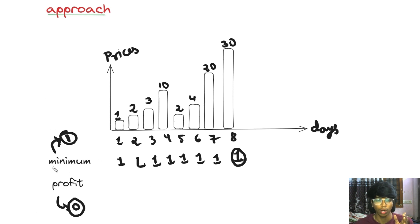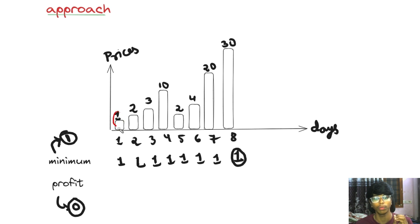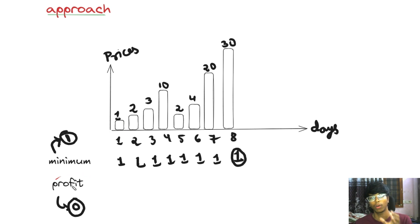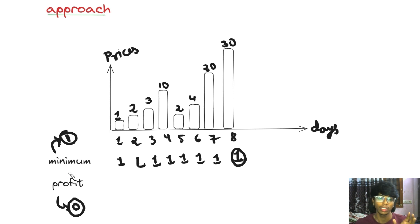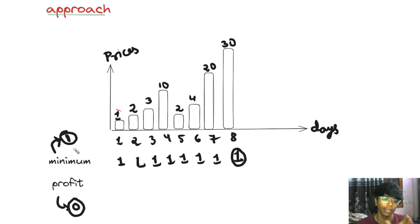Initially, we need a minimum variable — initialized to the first value in the array. Next, profit is a variable initialized to 0, which is the minimum possible profit. So initially, minimum equals the first day's stock price and profit is 0.